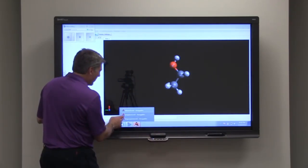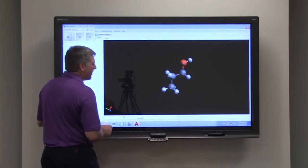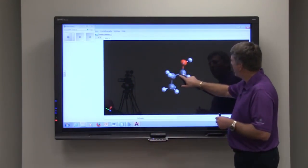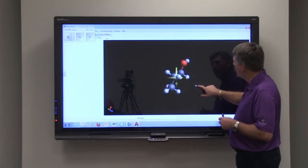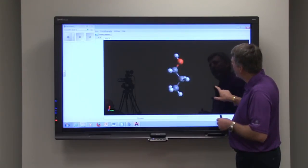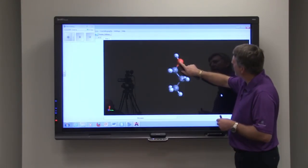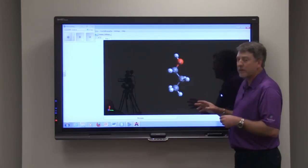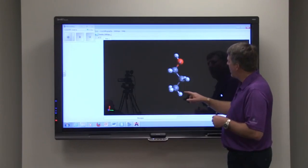Let's look at propanol. 'Prop' tells us that we have three carbons - one, two, three. There are our three carbons, and then here is our OH group or hydroxyl group. So this is propanol - 'prop' for three carbons.